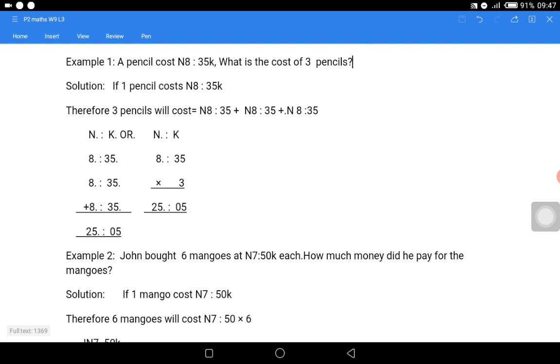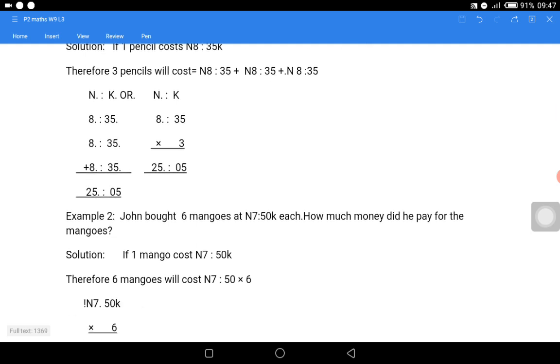If one pencil costs N8.35k, therefore three pencils will cost N8.35k + N8.35k + N8.35k. What you get as your answer is the total amount you will pay for the three pencils. Let us look at how we arrange the problem. The problem given to us in words has now been interpreted into figures.